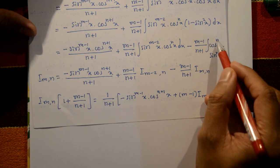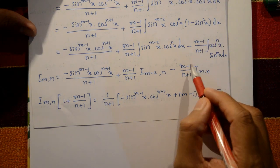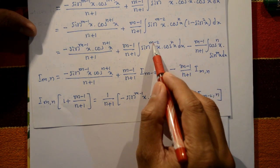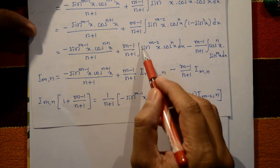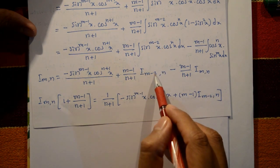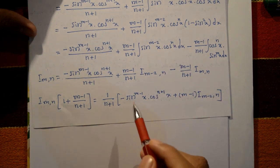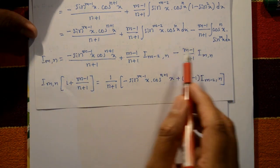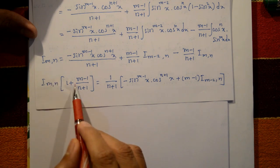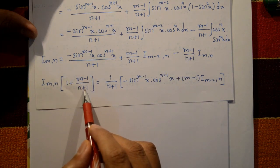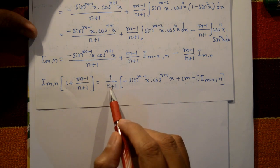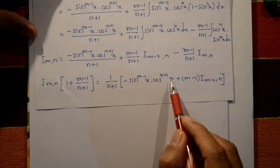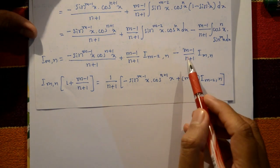Collecting I_mn on the left side: I_mn + (m−1)/(n+1)·I_mn = boundary term + (m−1)/(n+1)·I_(m-2,n). Factoring gives I_mn·[1 + (m−1)/(n+1)] = I_mn·(m+n)/(n+1). So the reduction formula is: I_mn = −sin^(m-1)(x)·cos^(n+1)(x)/(m+n) + (m−1)/(m+n)·I_(m-2,n). This is equation (1).